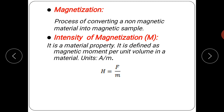If a solid is placed in a magnetic field, then the magnetic field gets redistributed as compared to the distribution when the solid is not in the field. The resultant magnetic field is given by the sum of the primary field and the field created by the solid.